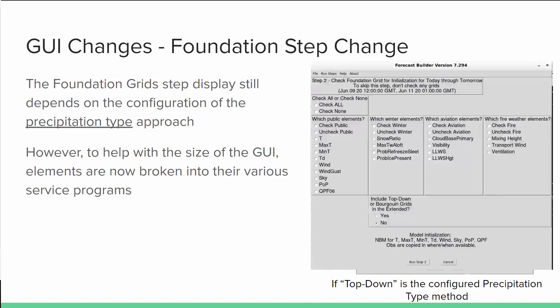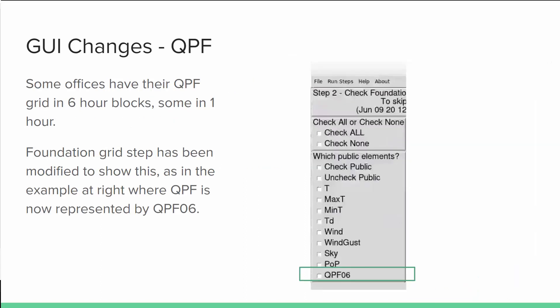This example shows the top-down configure precipitation type method. Recall there are several different precipitation type methods you can utilize with Forecast Builder. Also in the foundation step GUI, you will notice that one element with QPF is now changed to QPF 06. The reason is that while many offices create QPF grids in six-hourly hard-coded time blocks, some offices do one-hourly QPF blocks. This helps separate the six-hourly and one-hourly options. For most offices, treat QPF 06 as QPF, and for those offices that do one-hour QPF, you'll see QPF 01 — just treat that as your QPF grid.